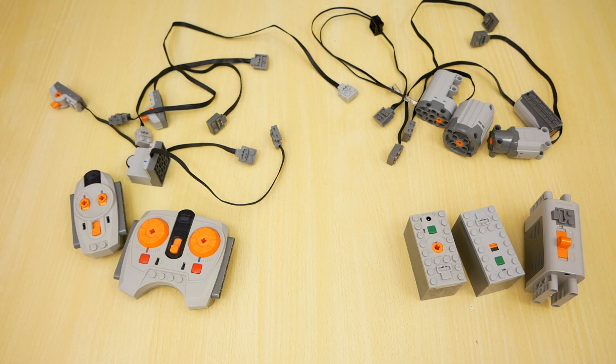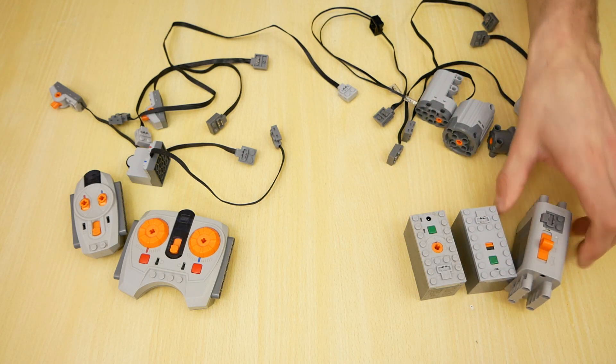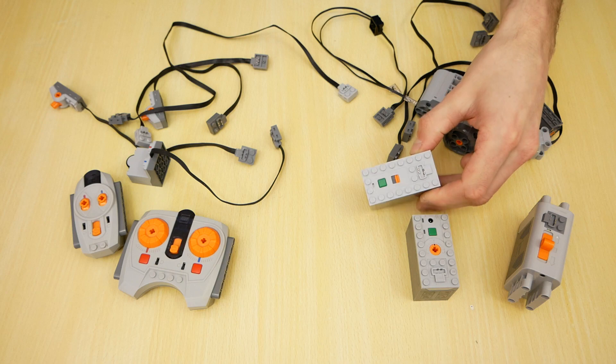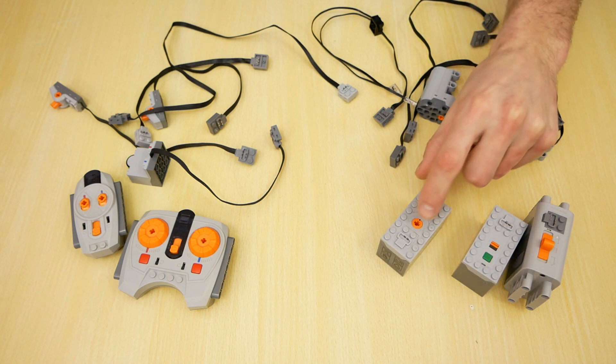Let's take a look to the power functions components. Large battery box for AA batteries. Battery box for AAA batteries. And battery box with rechargeable battery and speed control.